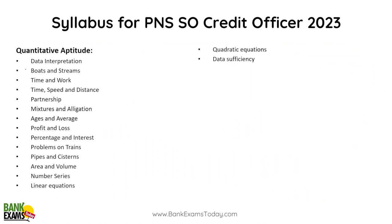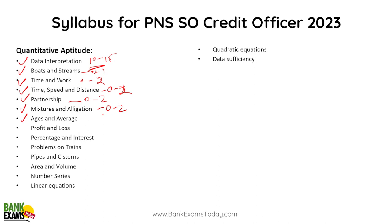In quantitative aptitude, data interpretation is very important — expect 10-15 questions directly from DI out of 50. Boats and streams, time and work, speed and distance, partnership, mixtures and allegations, ages and averages — these give 0-2 questions each. Profit and loss, percentage and interest, problems based on trains, pipes and cisterns, area and volume occasionally appear. Number series, linear equations, quadratic equations, and data sufficiency give 1-2 questions each.